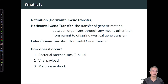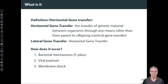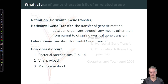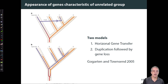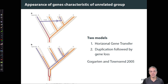And if a cell leaks genetic information, for example from membrane shock, then another bacterium may pick it up and incorporate it into its genome. So the process of horizontal gene transfer via these mechanisms can lead to some interesting outcomes.